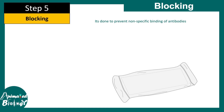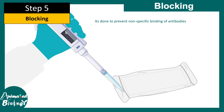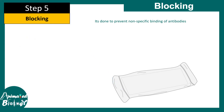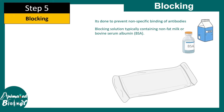Then a blocking step is performed to prevent non-specific binding of antibodies. The blocking buffer coats all portions of the membrane so that antibodies do not non-specifically bind to the membrane — they should only find the protein of interest. Blocking solution is generally made up of non-fat milk or bovine serum albumin (BSA), and this step ensures that antibodies later on do not stick non-specifically to the membrane.